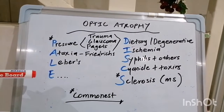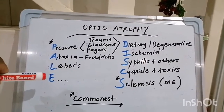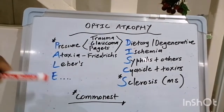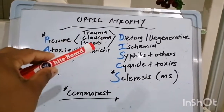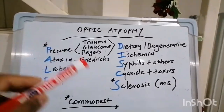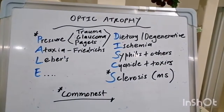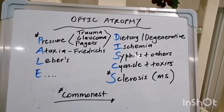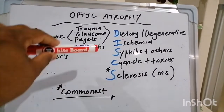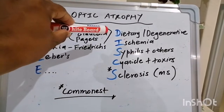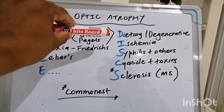Leber's optic atrophy also fits into the same genetic category as Friedreich's. E is a misnomer — there's actually nothing that corresponds to E; it's just meant to make the mnemonic work. D is for dietary, covering B12 deficiency and degenerative issues like retinitis pigmentosa.